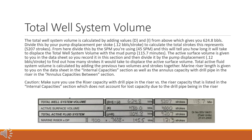The total well system volume is calculated by adding values D and I from above, which gives you 624.8 BBLS. Divide this by your pump displacement per stroke (0.12 BBLS/stroke) to calculate the total strokes: 5,207 strokes. Divide this by the SPM you're using (45 SPM) and this will tell you how long it will take to displace the total well system volume: 115.7 minutes. The active surface volume is given to you in the data sheet, so you record it and divide it by the pump displacement (0.12 BBLS/stroke) to find the strokes needed. Total active fluid system volume is calculated by adding the previous two volumes and strokes together.